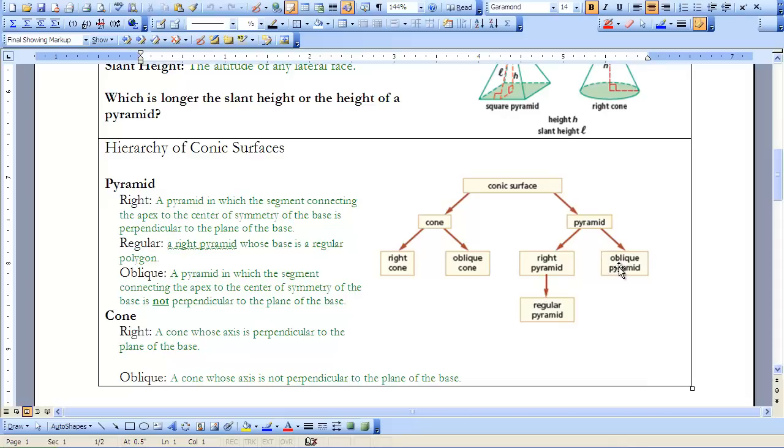If it's not a right pyramid, then it would be considered to be oblique, kind of off to a slant. Same thing for the cone: right cone or oblique. We'll explore some better pictures and actually look at three-dimensional figures of oblique and right cones and pyramids in class.